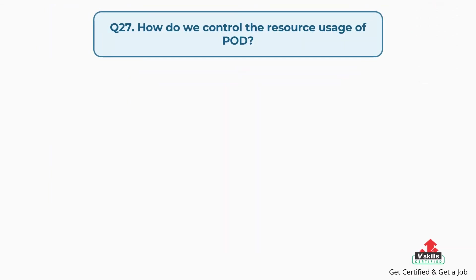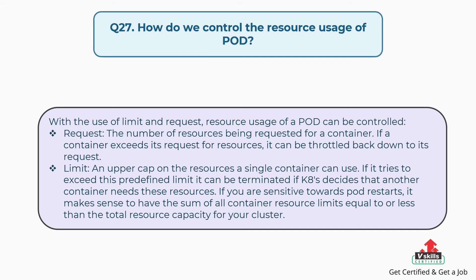Question number twenty-seven: How do we control the resource usage of a pod? With the use of limit and request, resource usage of a pod can be controlled. Request means the number of resources being requested for a container — if a container exceeds its request for resources, it can be throttled back down to its request. Limit means an upper cap on the resources a single container can use; if it tries to exceed this predefined limit, it can be terminated if K8s decides that another container needs those resources. If you are sensitive towards pod restarts, it makes sense to have the sum of all container resource limits equal to or less than the total resource capacity for your cluster.